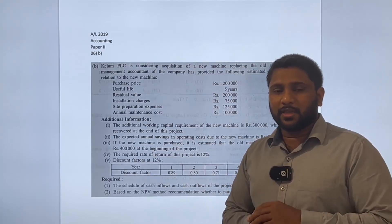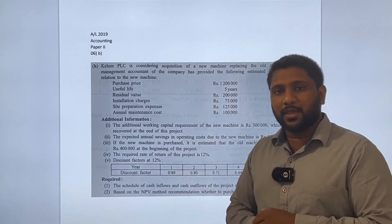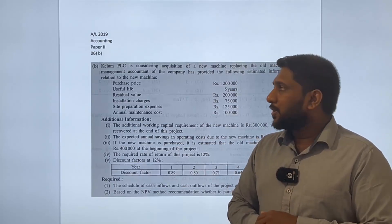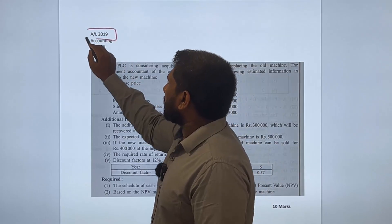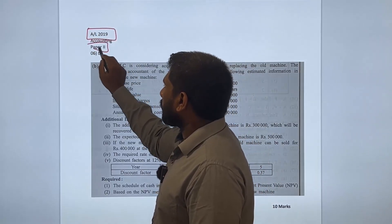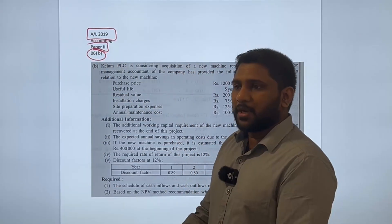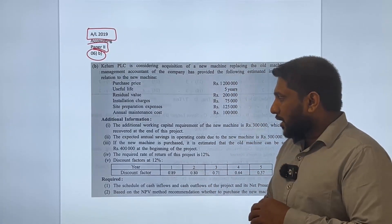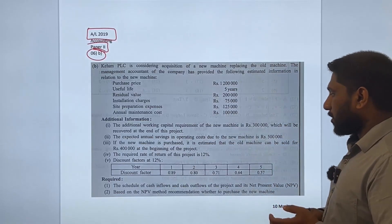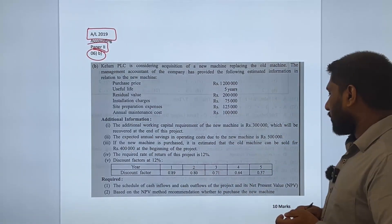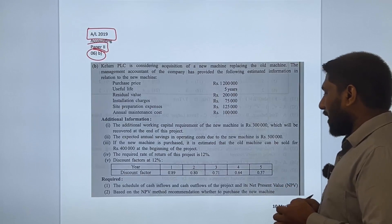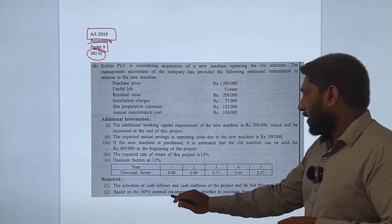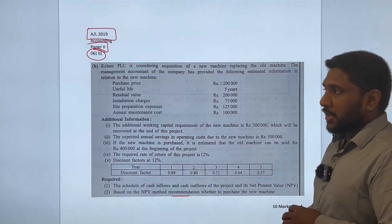Hi guys, let's do another past paper question. Today we are going to discuss a question from the NPV area — specifically A-level accounting 2019 paper 2, question number 6 part B. This question counts for 10 marks. There are two requirements: first, prepare the inflow/outflow schedule and calculate the NPV; second, write a recommendation.